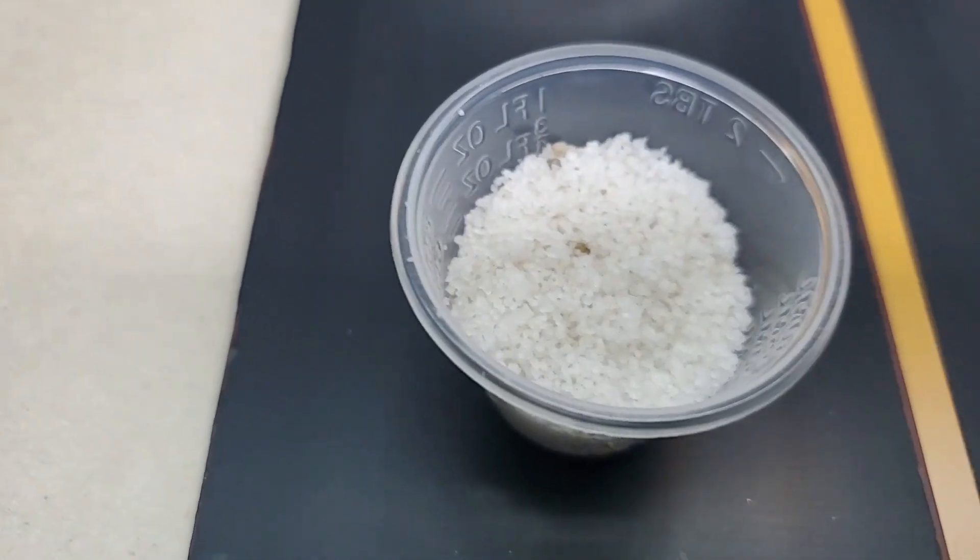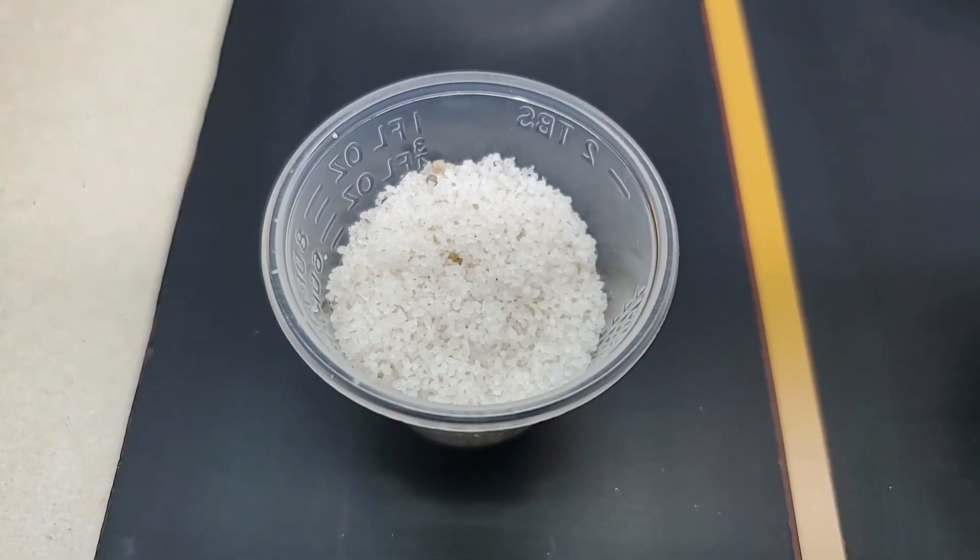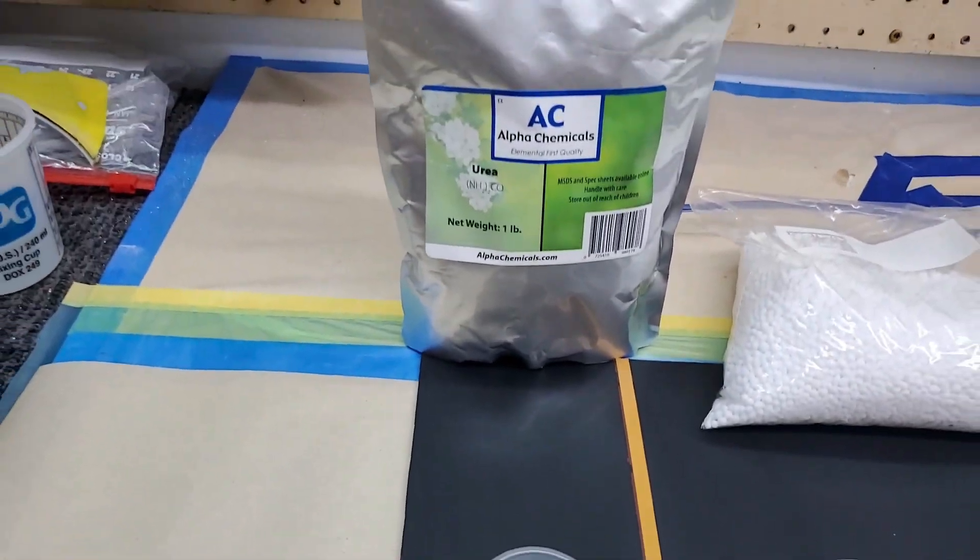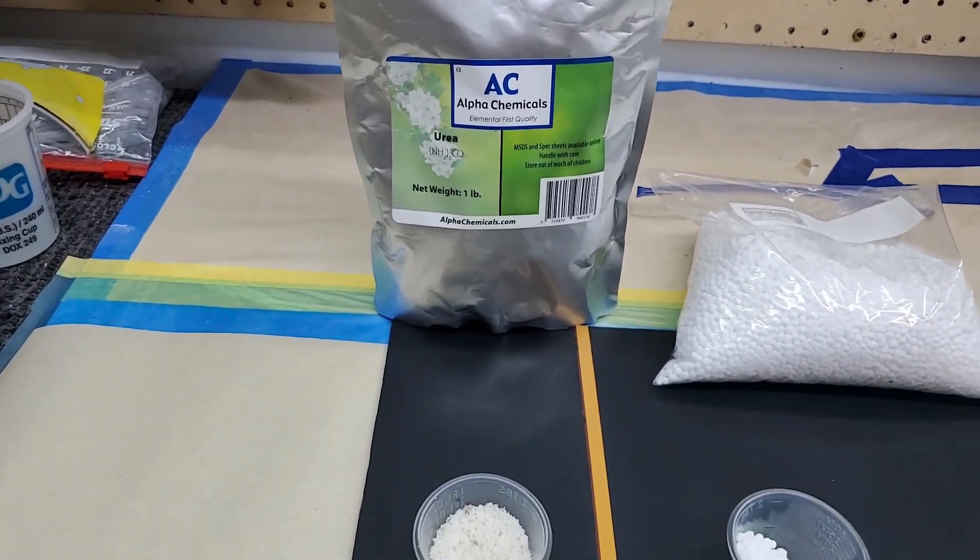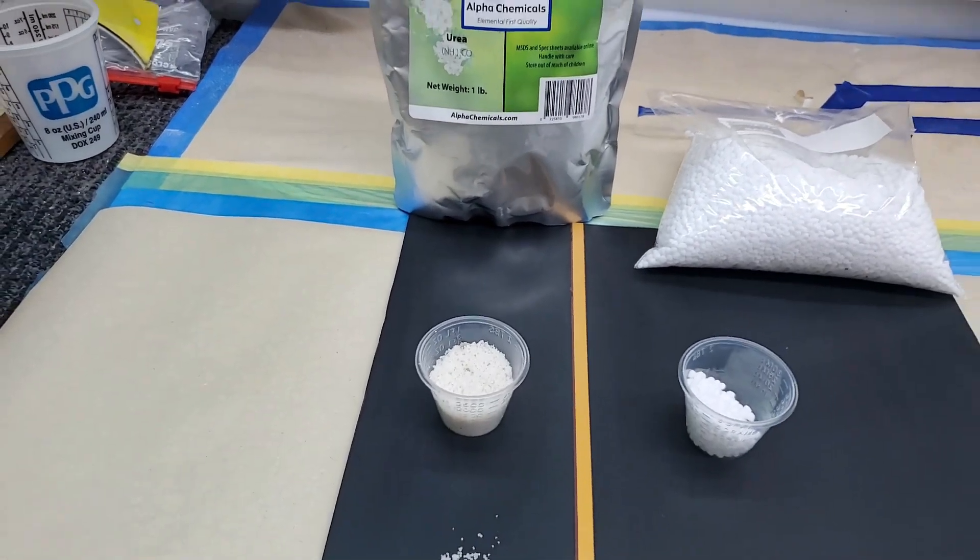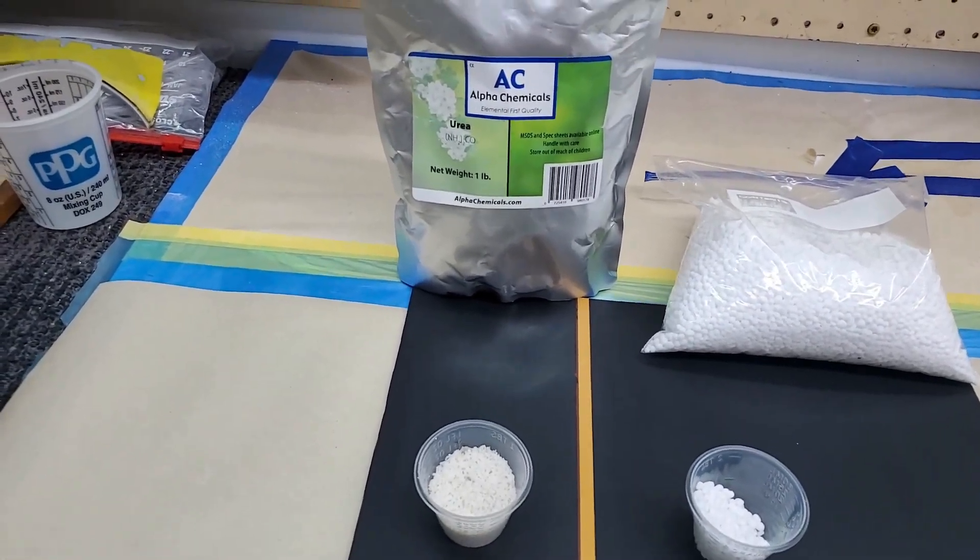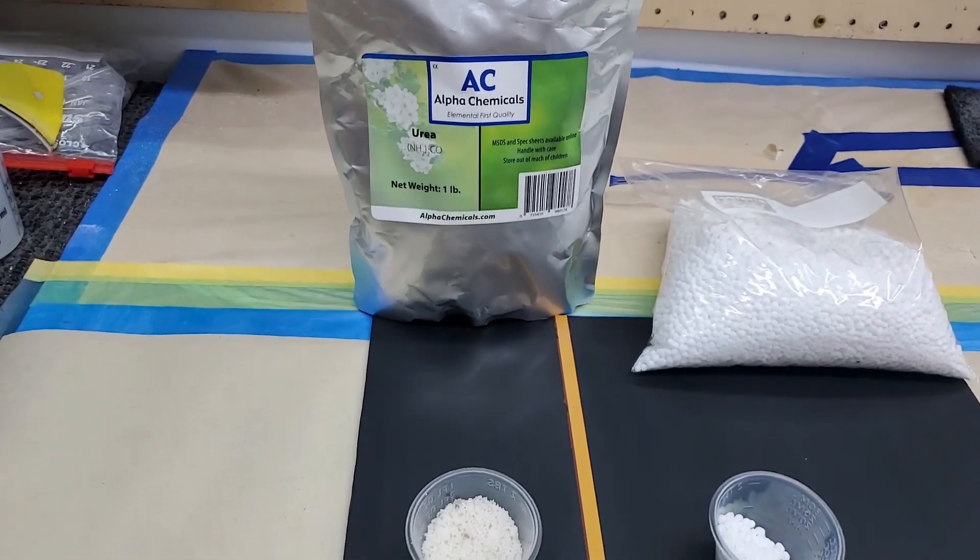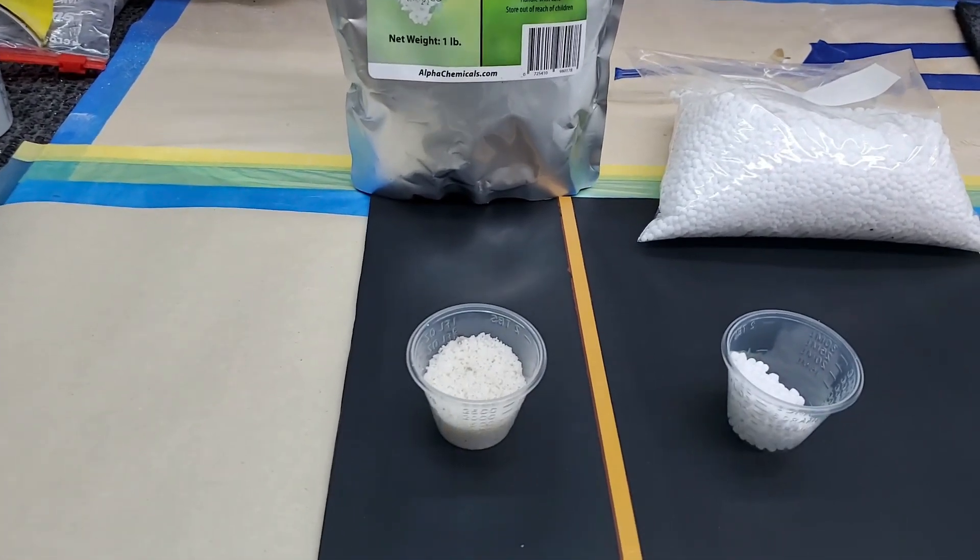And the color on this, if you compare it to this, is an off white instead of a pure white and you can see little chunks of other stuff in there. Now I'm not saying this Alpha Chemicals urea is not good to use. I did use this on the first mailbox that we did and I had great results with it, it's a little harder to mix.